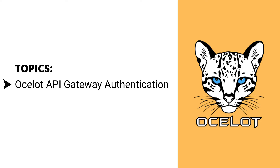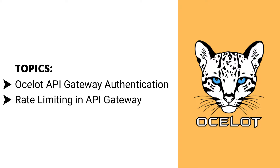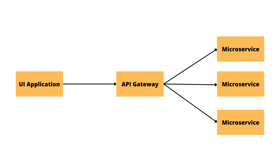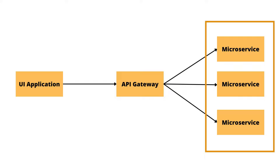Hi, welcome to Coding Droplets. In this video we are going to see how to implement JWT authentication in Ocelot API Gateway. I am also showing the rate limiting functionality of the API Gateway in the same video. We can implement the authentication mechanism either in Ocelot API Gateway or in the APIs behind the API Gateway. Let me know which one you prefer in the comments section and explain why — it will help others as well. In this video I'll be showing you both, so let's get started.